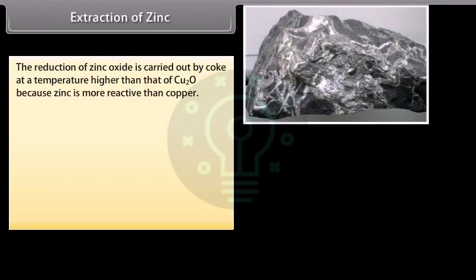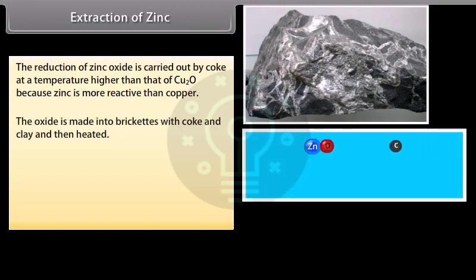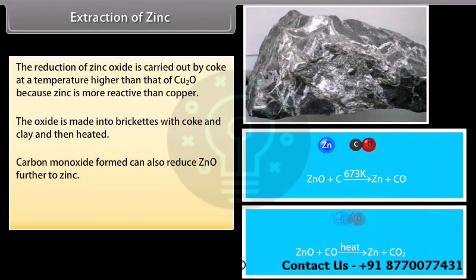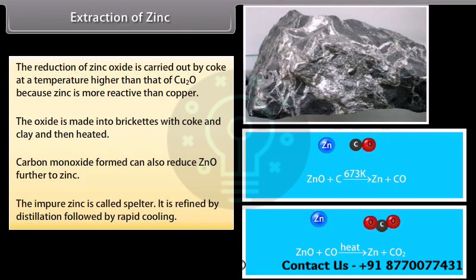Extraction of zinc. The reduction of zinc oxide is carried out by coke at a temperature higher than that of Cu2O because zinc is more reactive than copper. The oxide is made into briquets with coke and clay and then heated. Carbon monoxide formed can also reduce ZNO further to zinc. The impure zinc is called spelter. It is refined by distillation followed by rapid cooling.